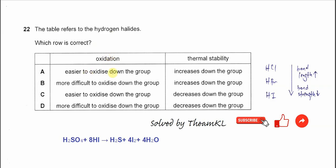Easier to oxidize down the group or more difficult to oxidize down the group? When down the group from HCl, HBr to HI, we know that the bond energy of HCl is stronger. It's harder to be oxidized.